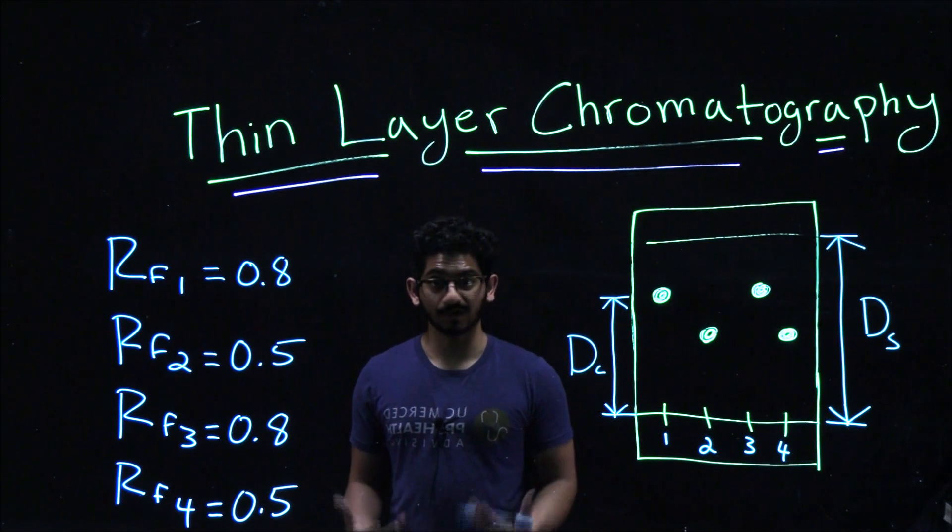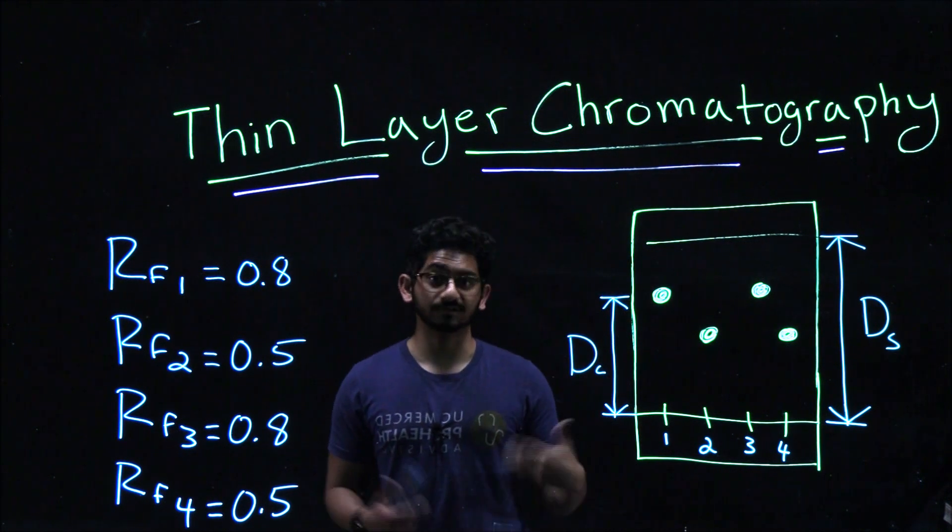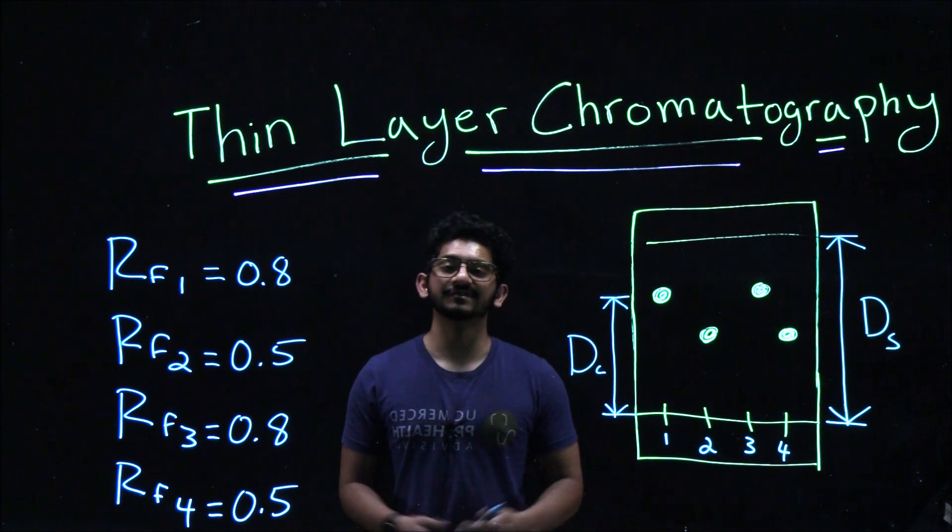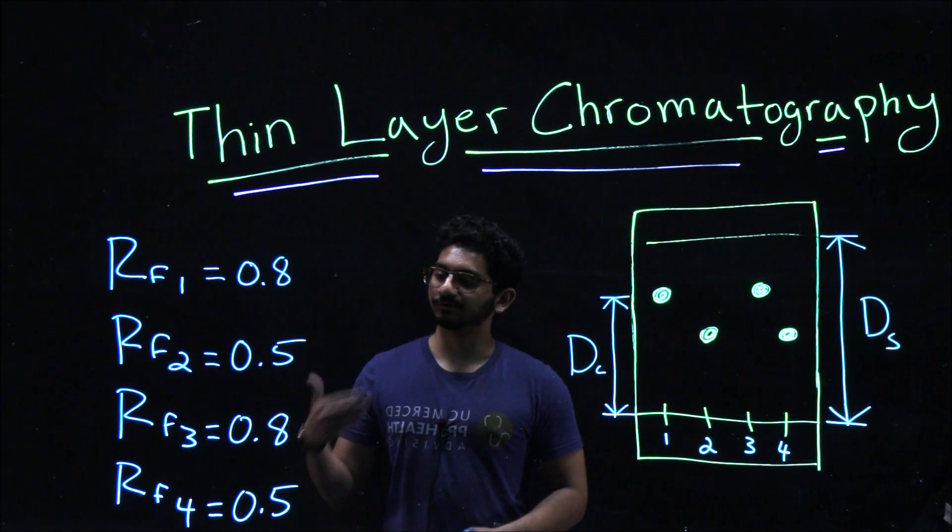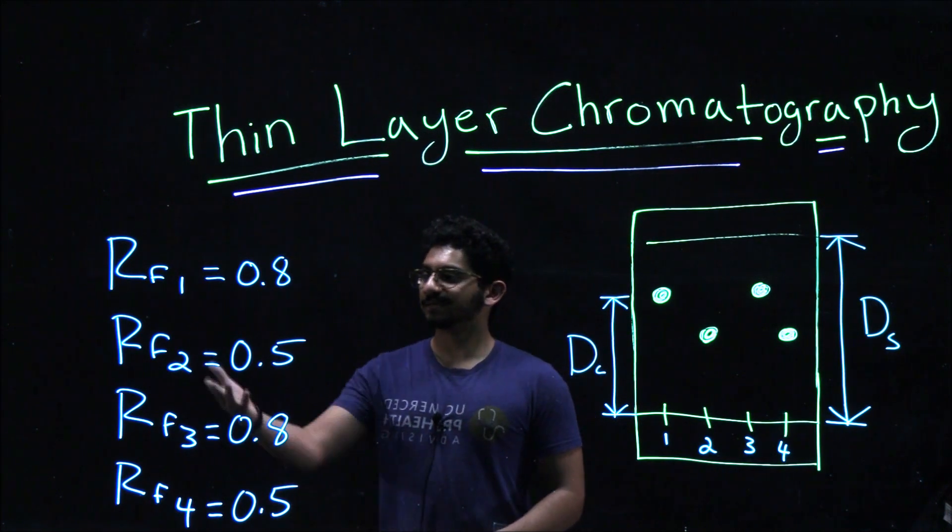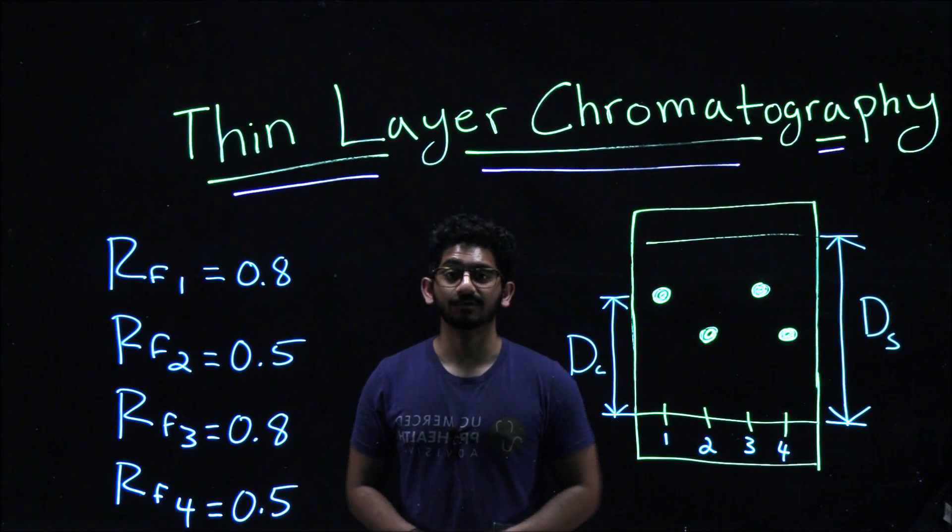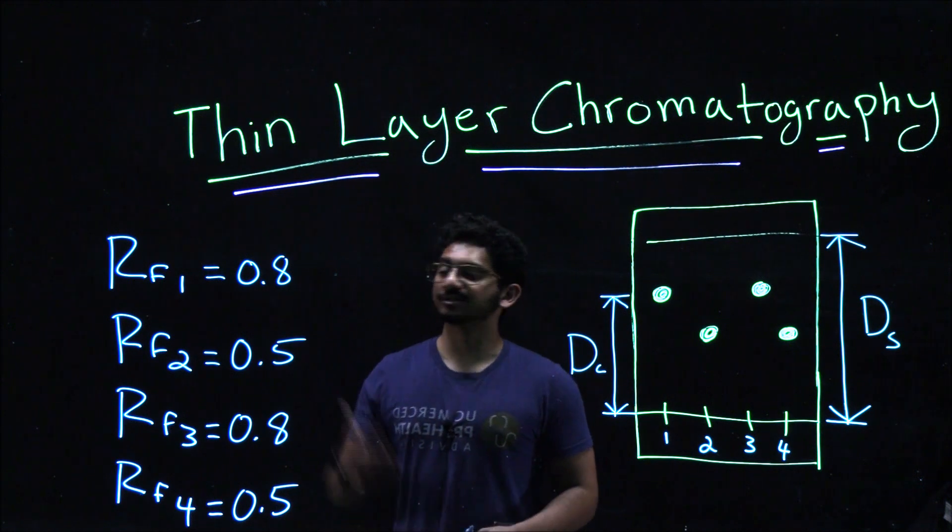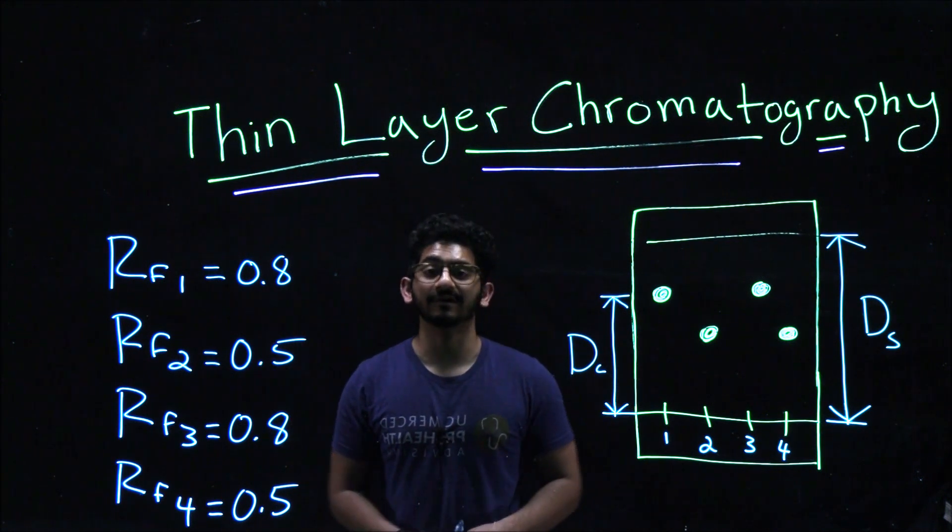Because spot 1 and 3 have the same RF values, they are most likely to be the same compound. If lane 1 was your standard compound, meaning one that's already been provided to you, and spot 3 is something you've synthesized, you can definitively say spot 1 and 3 are very similar, if not the same, so you have indeed made your compound. Same goes for spot 2 and spot 4 with an RF value of 0.5. Additionally, we know that spots 1 and 2 are different compounds because they do have different RF values.